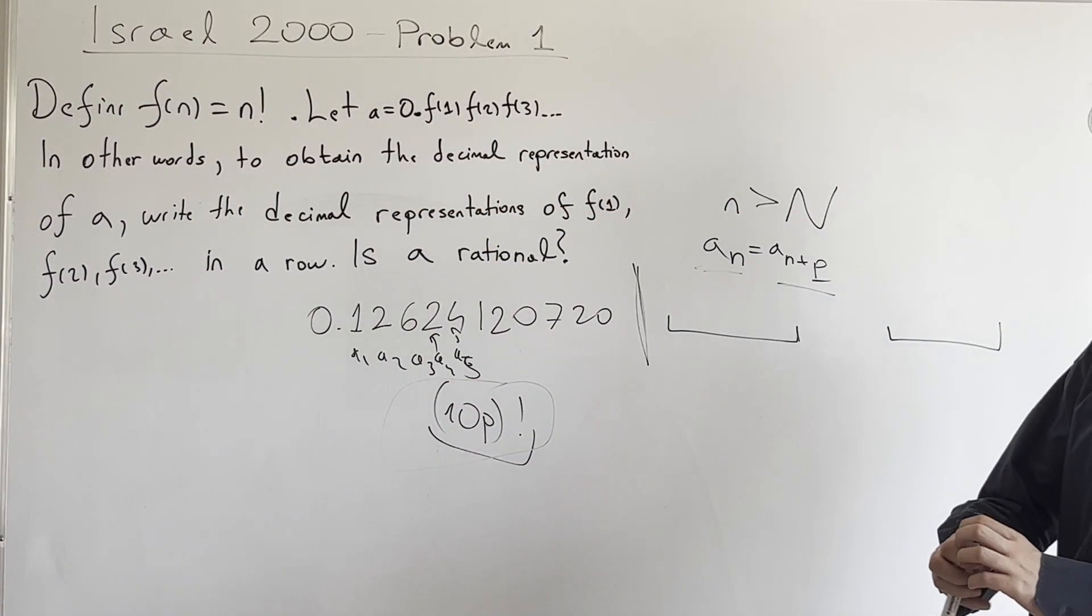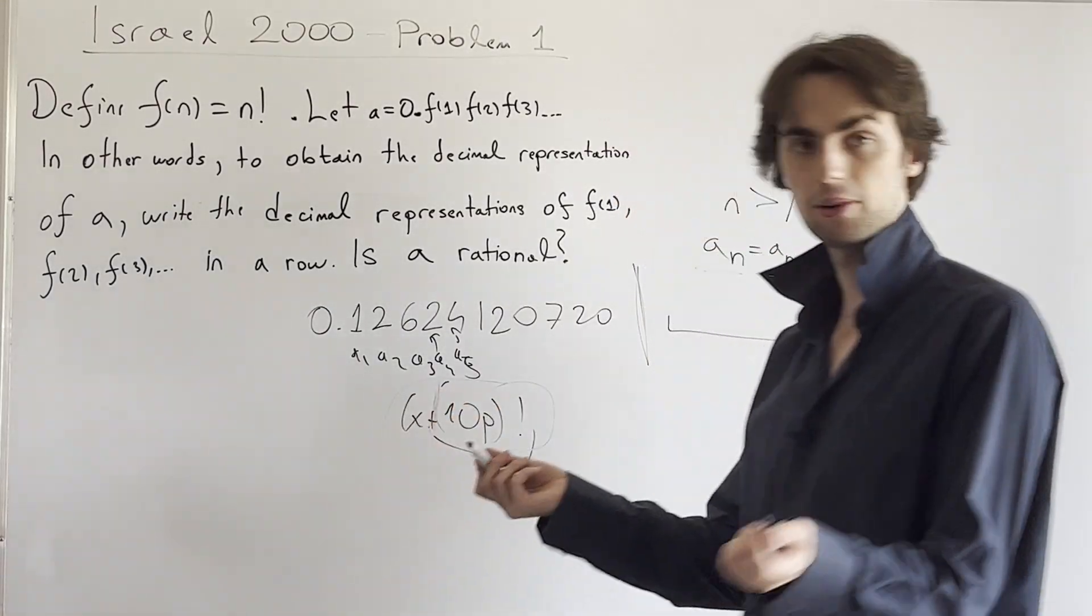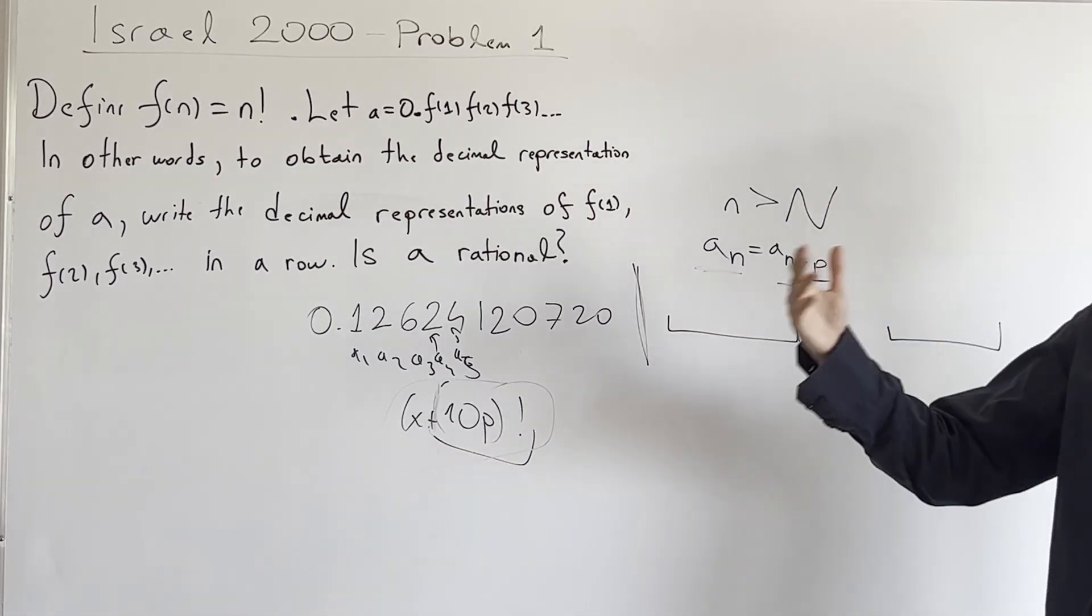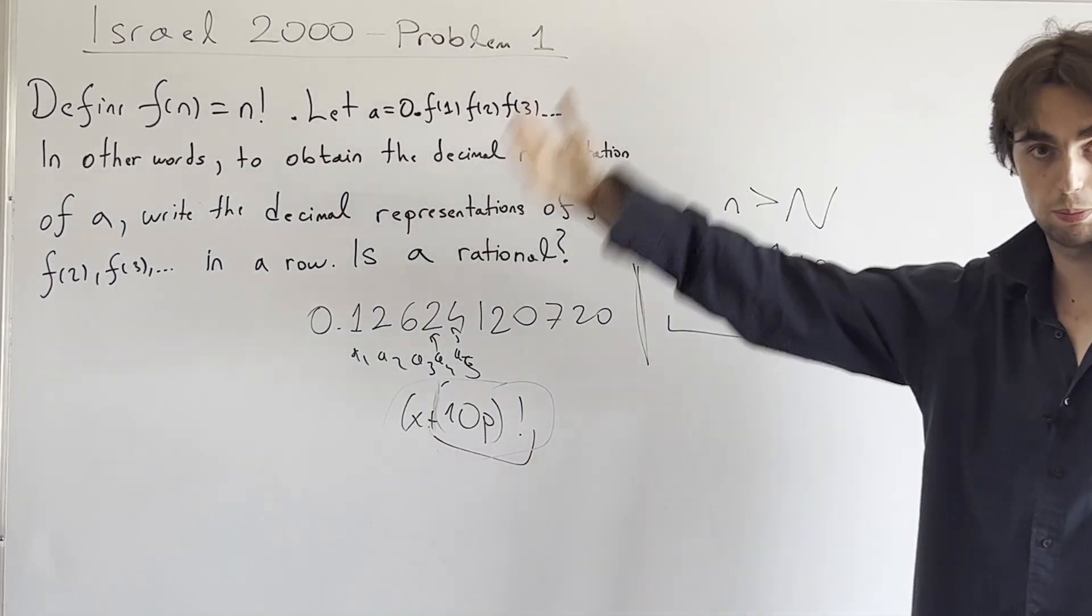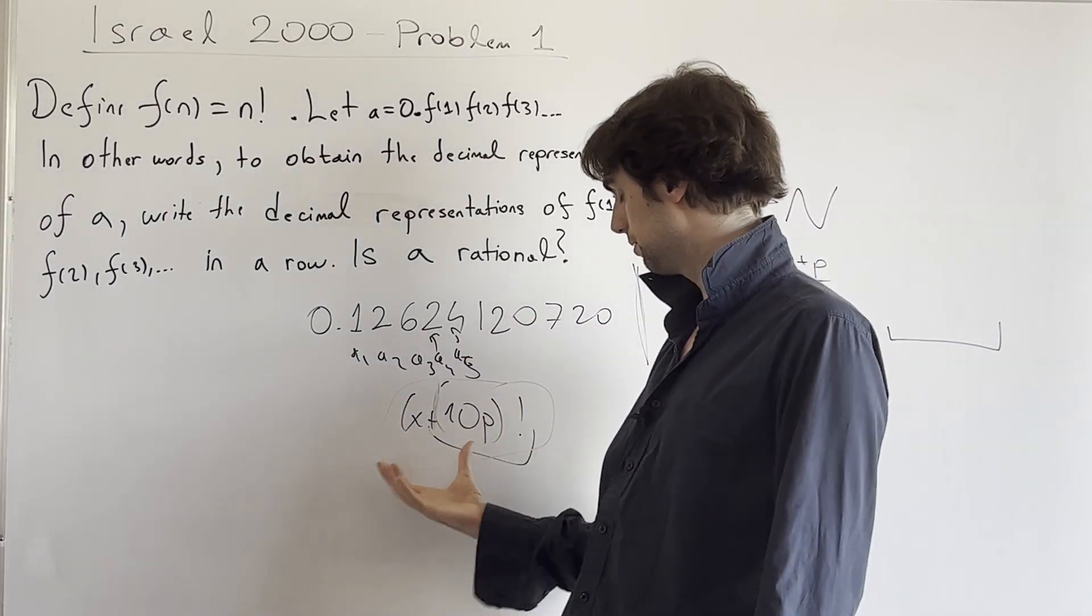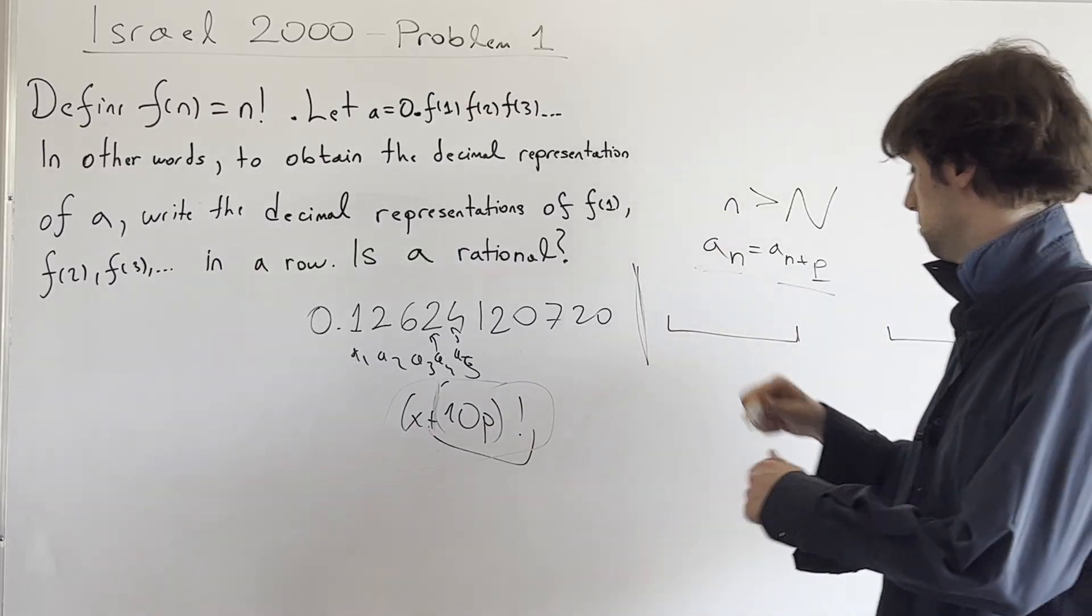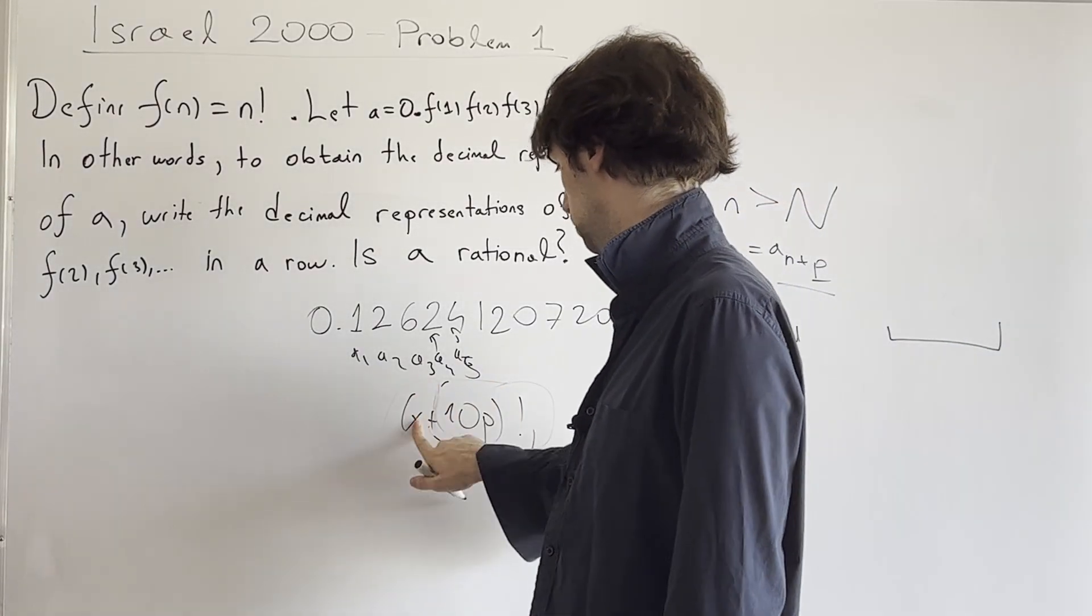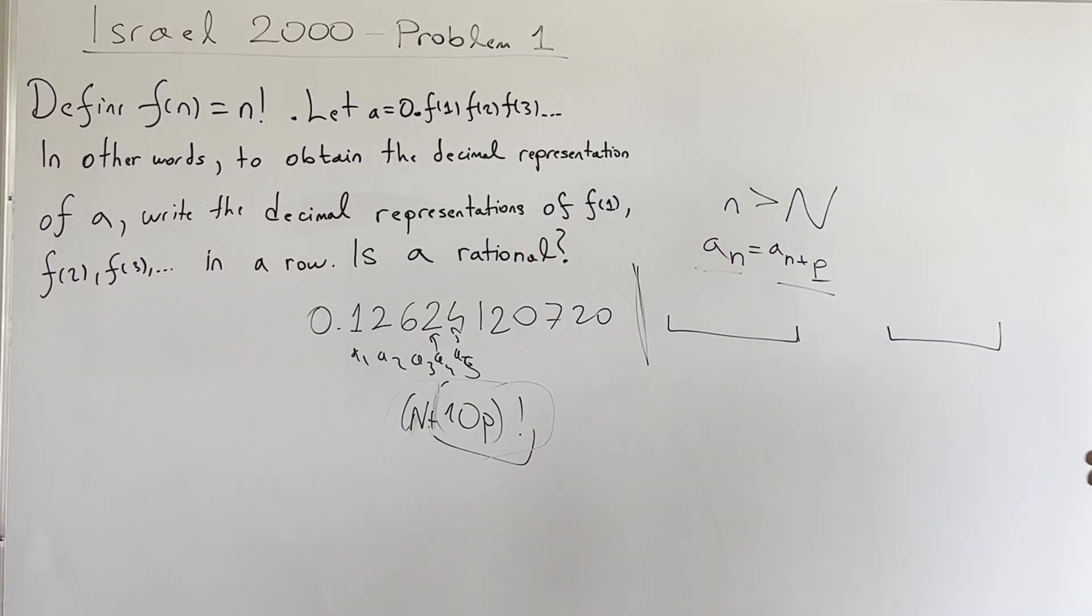And so, or 10P plus factorial of X plus 10P for whatever X. Still, it has 10 times 10 times 20 times all the way till times 10 times P, right? So we're going to have this number if we just pick an X such that, or we just pick X is equal to N. There you go. X is equal to N.